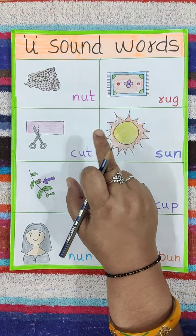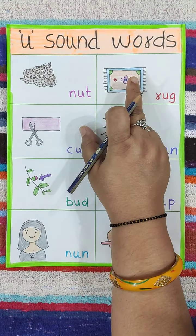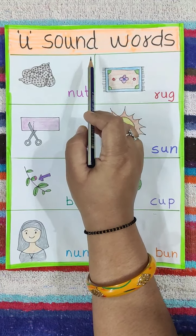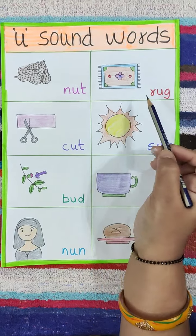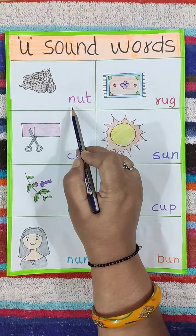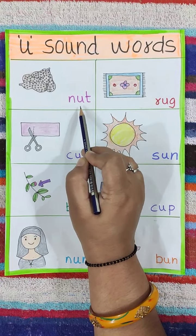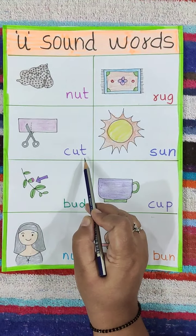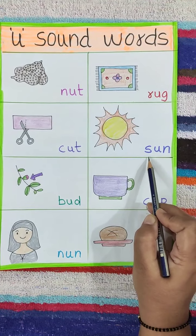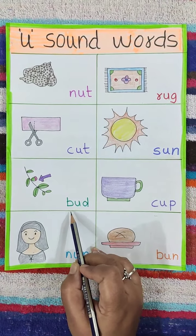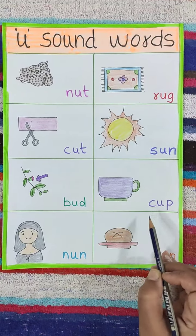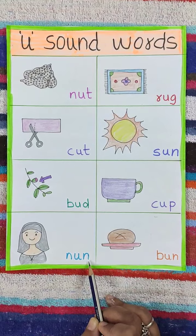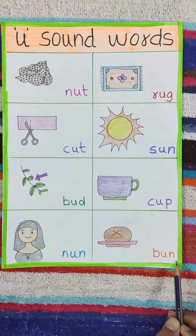First we will spell the sound words. You know that U letter has a sound of A. So we will start. N, U, T — nut. R, U, G — rug. C, U, T — cut. S, U, N — sun. B, U, D — bud. C, U, P — cup. N, U, N — none. B, U, N — bun.